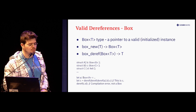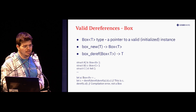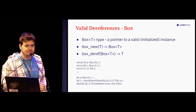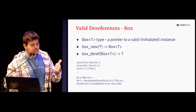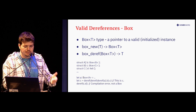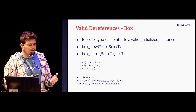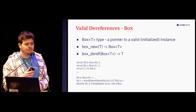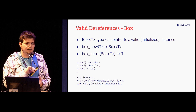And now we can introduce this type called box. A box type is supposed to be always a pointer to a valid instance. The only functions we allow on box are these two: box_new, which is the only way to create boxes — it takes some value and returns a box pointer. And then we have box_deref, which takes this pointer and returns T.